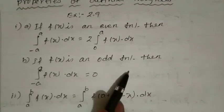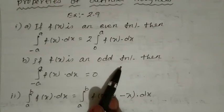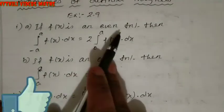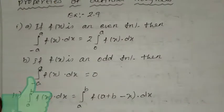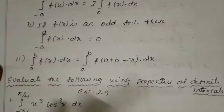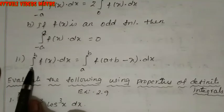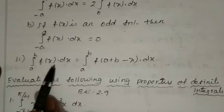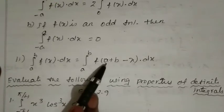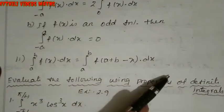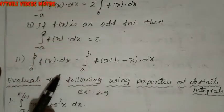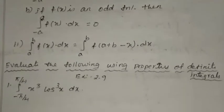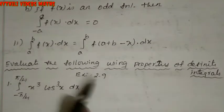For an odd function, the answer is simply 0. So for even functions we write 2 times the integral; for odd functions we write 0. We also use one more property: the integration from a to b of f(x) dx equals the integral from a to b of f(a+b-x) dx. These three properties we will use to do Exercise 2.9.